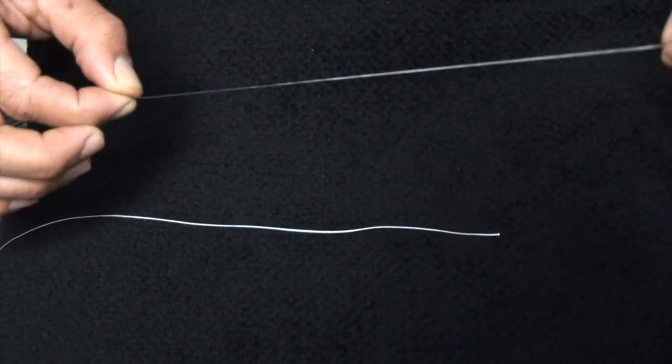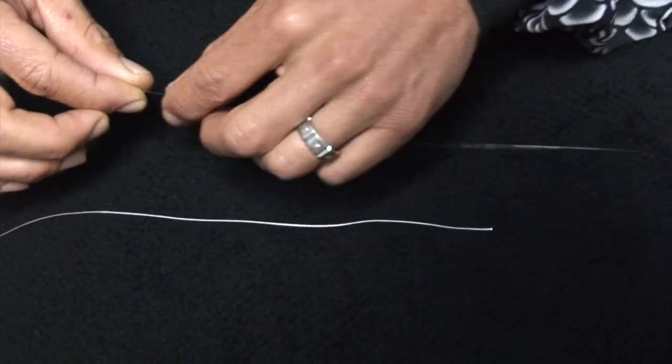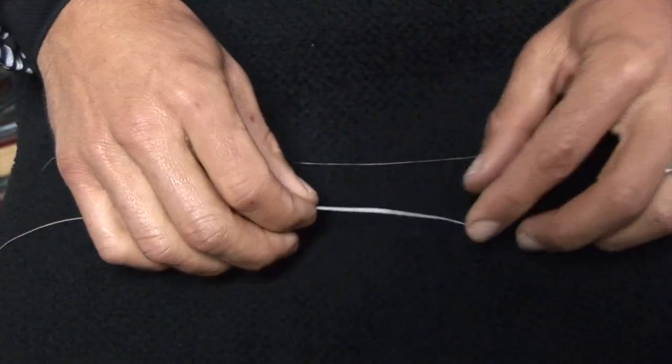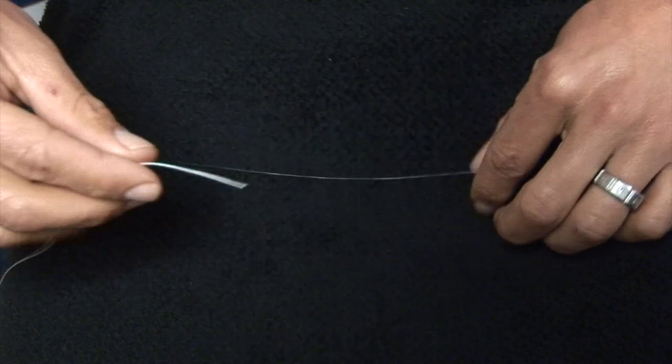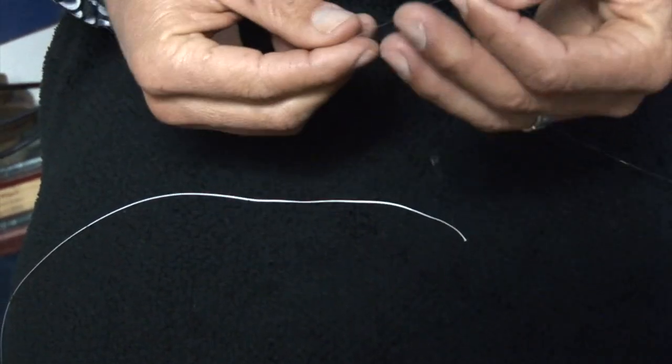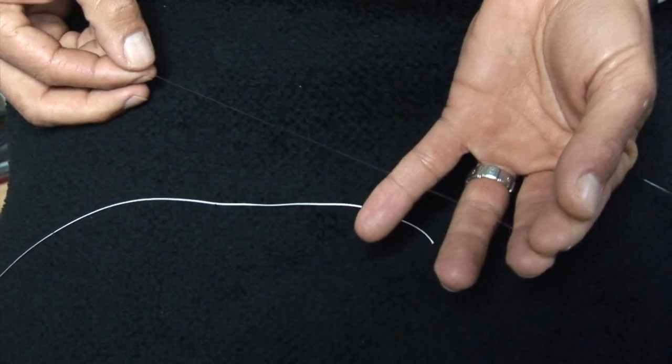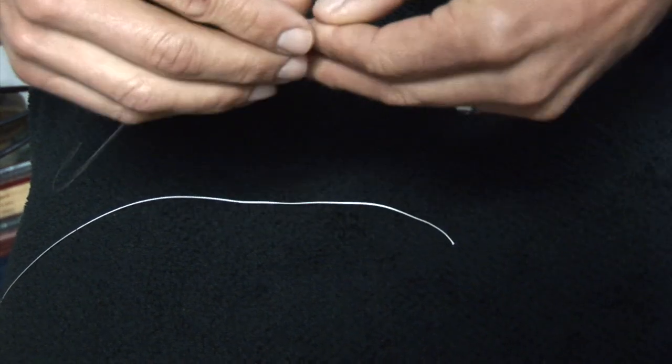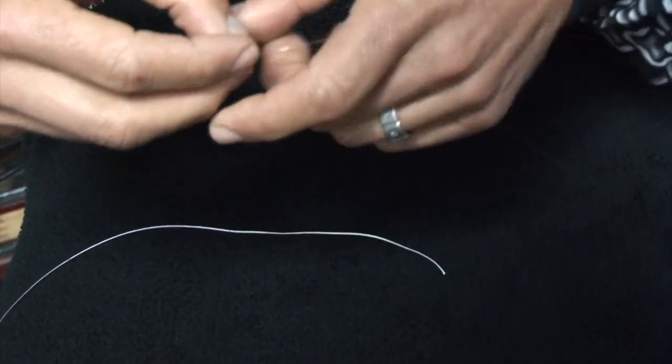So I like the stiffer fluorocarbons for that. Again, it's Shooter. This is white braid here. And the Albright you want to start off by taking your line, make sure you give yourself enough, maybe 10 to 12 inches, especially to practice with. It makes it a lot easier.